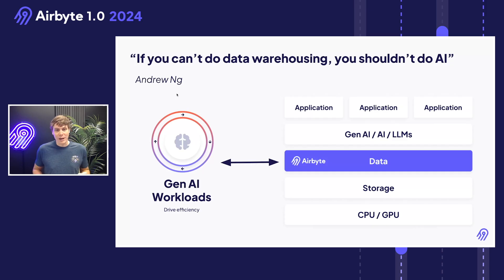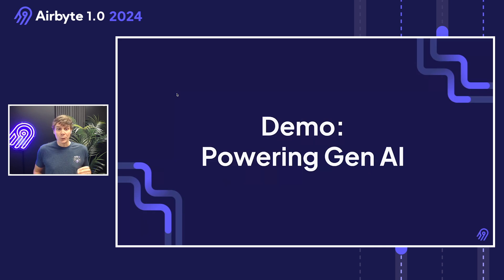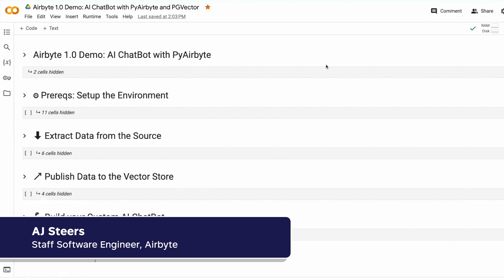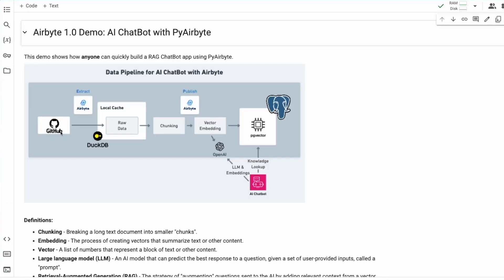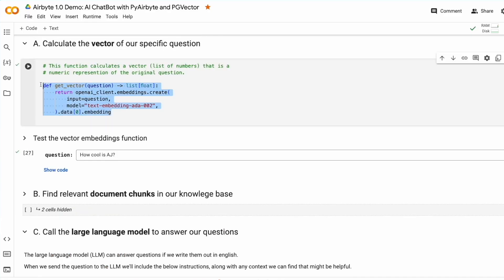If you cannot do data warehousing, you should not do AI. We will show you how Airbyte is powering the data layer of the GenAI work. Today I'll be demoing how anyone can build their own chatbot using PyAirbyte. Our source data in this case will come from GitHub. We'll load it automatically to an internal DuckDB cache, and we'll use the new PG vector destination to perform chunking, vector embedding, and loading to PG vector. We're going to create a simple function that takes any question you might have and converts it into a numeric representation.